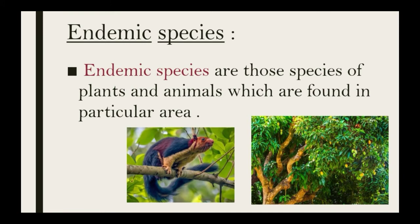Next we look into endemic species. Endemic species are those species of plants and animals which are found exclusively in a particular area. We can find them naturally there and cannot find them anywhere else.